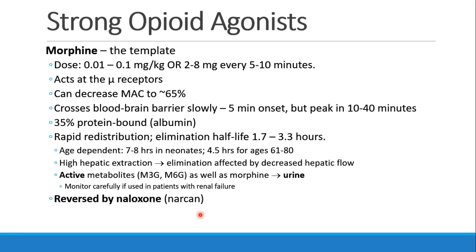Morphine has high hepatic extraction, so its elimination is affected by decreased hepatic blood flow. It has active metabolites excreted in the urine, so patients with renal failure should be monitored carefully. Morphine can be reversed by naloxone, also called Narcan, which we'll discuss later.